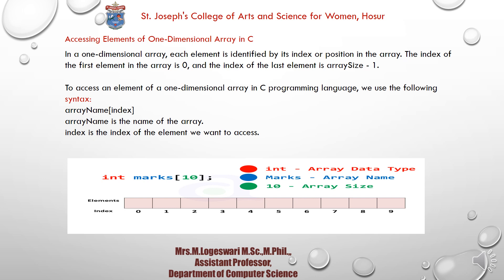Now, how to access elements of a one-dimensional array. Each element is identified by its index or position. The index of the first element is 0, and the last element index is size minus 1. The syntax to access an element is: array name followed by the index in square brackets. The index specifies which element you want to retrieve.